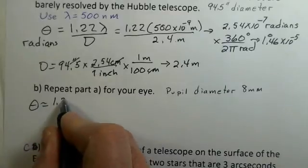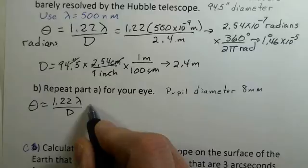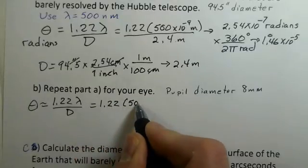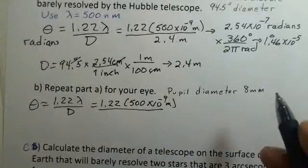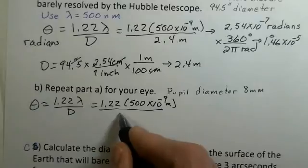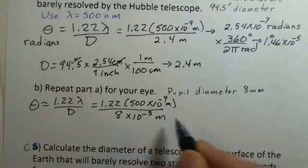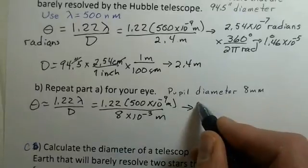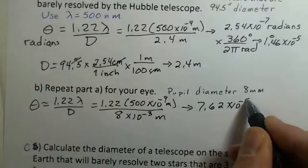We do the same formula. Theta is 1.22 lambda over D. I'm using the same wavelength: 1.22 then 500 times 10 to the minus 9 meters. Don't have to do quite as much conversion here. 8 millimeters, I bring in 10 to the minus 3 for the milli. You should pause and do this calculation.